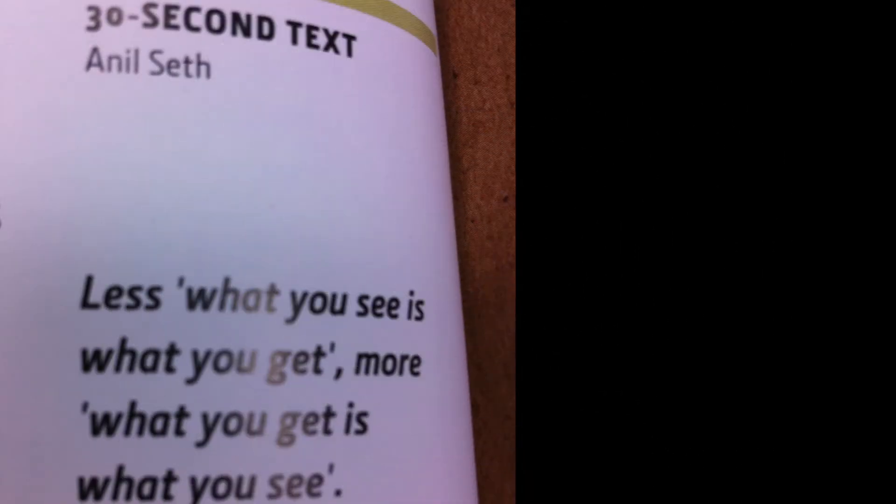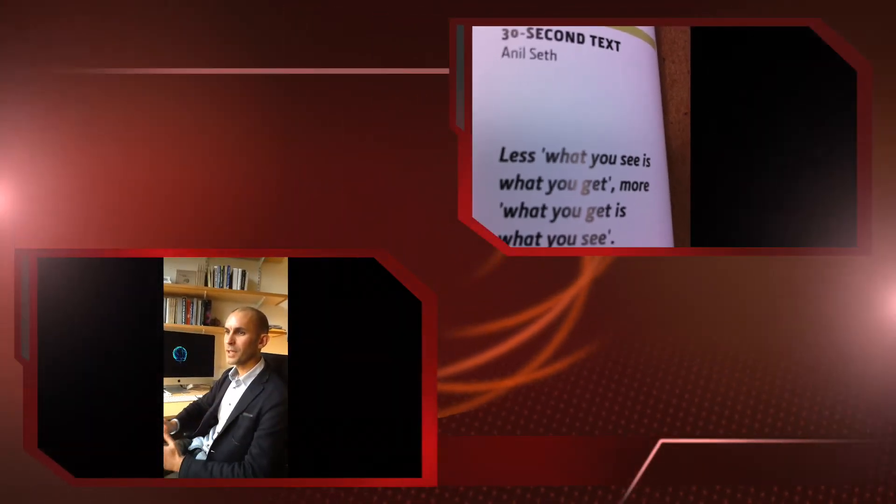There's actually a dog hidden in this image. And once you've seen the dog, it's very difficult to unsee it. What this shows is that when we visually interpret sensory data, we're bringing a lot to the table. The brain is actively bringing its concept of seeing a dog to the way you experience this image.